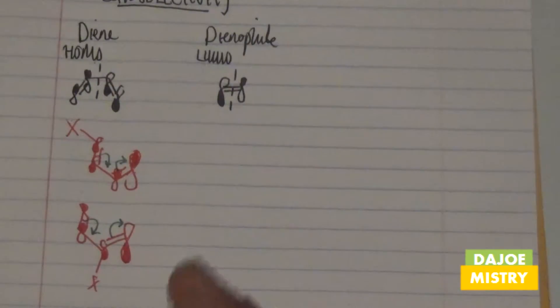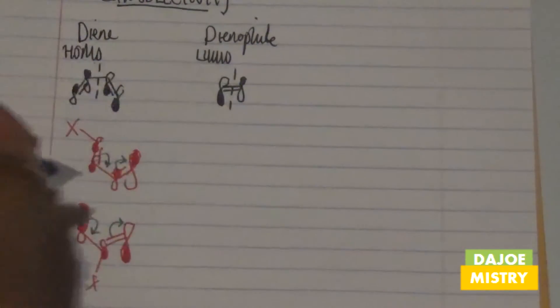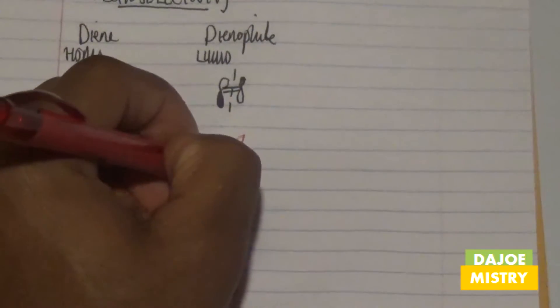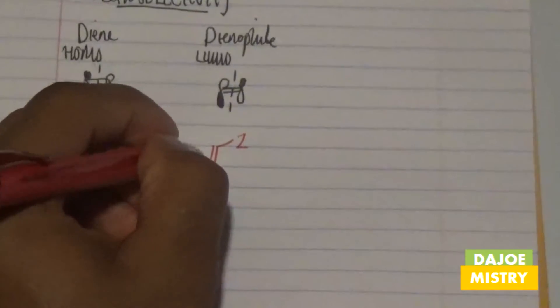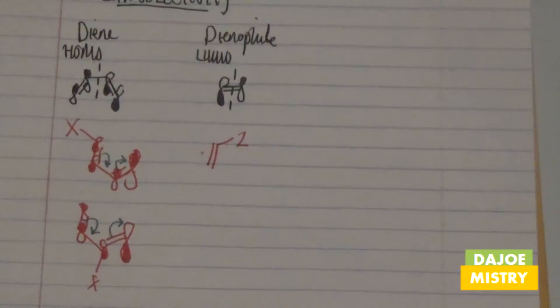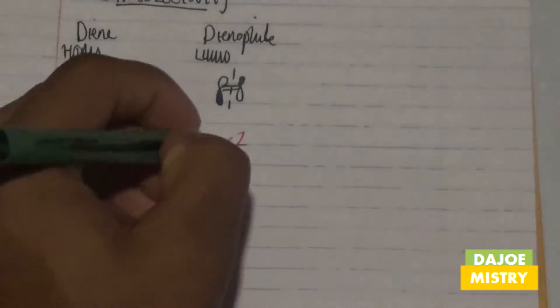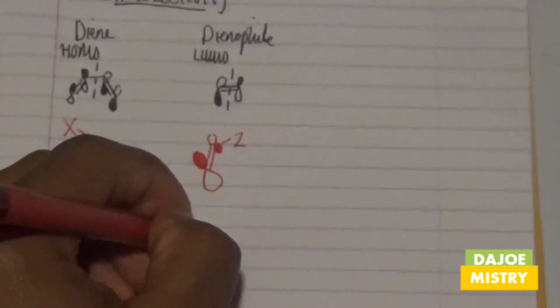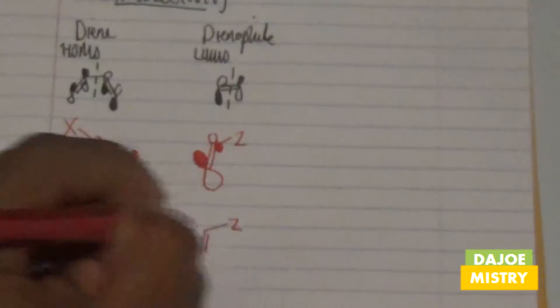On the dienophile side, the opposite case applies when including an electron withdrawing group (EWG), represented as Z. Because the LUMO is lacking electrons, the point where electrons are lacking the most is the terminal region — making that terminal lobe the bigger one, with out-of-phase relationship at the other lobe. This is the only positional condition for Z.